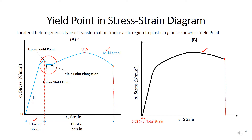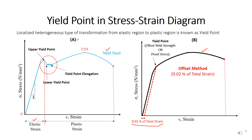In the offset method, we calculate the total strain up to the fracture and then calculate 0.2% of that total strain. We mark that 0.2% of total strain from the origin and draw a line parallel to the elastic region. Wherever this line cuts the stress and strain diagram, that point is the yield point, also known as the offset yield strength or proof stress. This method is known as the offset method or proof stress method.